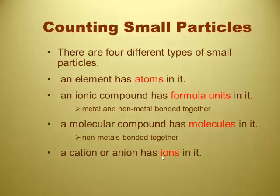Counting small particles. An element has atoms in it. Ionic compound is a formula unit. You should know what an ionic compound is and looks like and named. That's type one and two for those of us who don't remember. And a molecular compound is molecules. That's type three. And ions are ions. Those are the charge things, right? Yep.